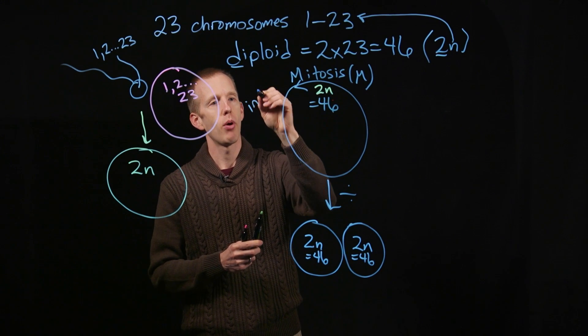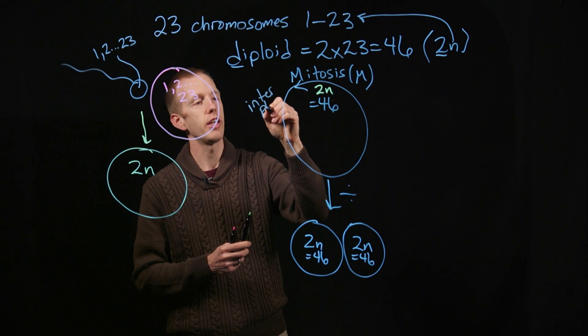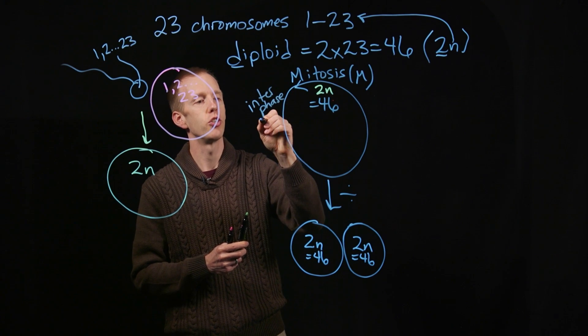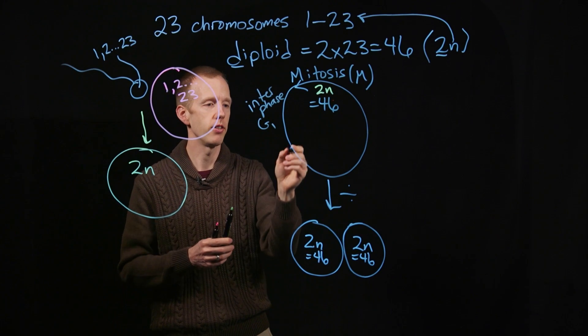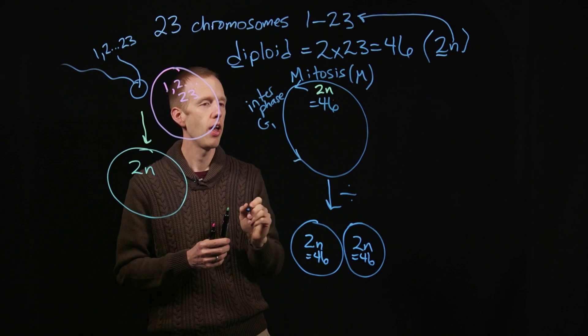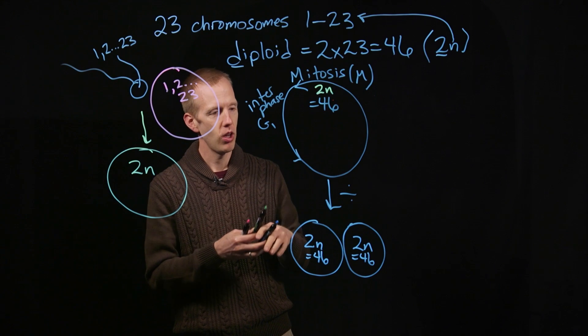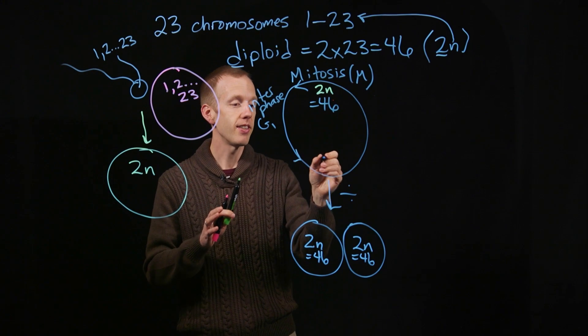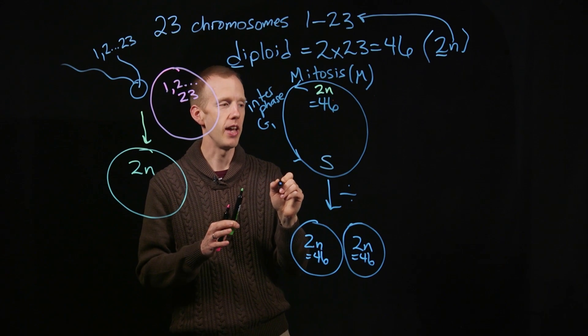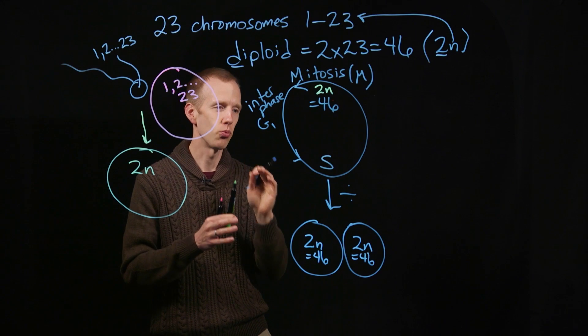After mitosis, we have part of the cell cycle that's called interphase. This is G1, a growth phase. Then after the growth phase, where nothing is changing to the number of chromosomes inside the cell, we have synthesis, or S phase, and this is where DNA is replicated.